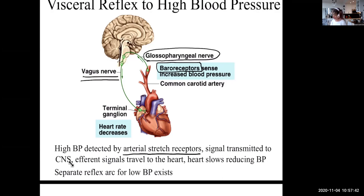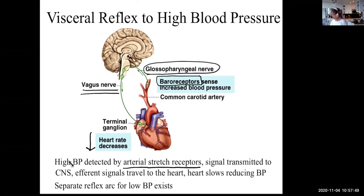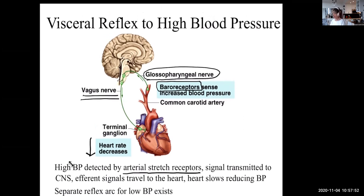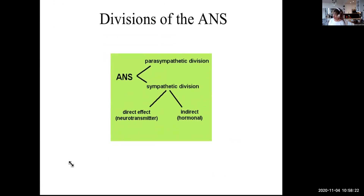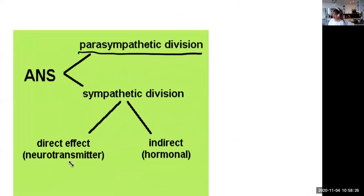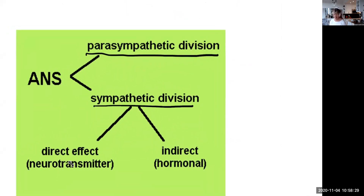Why would the heart rate decrease in response to increased blood pressure? Lower heart rate means less blood being pumped to the body. There's a whole different reflex arc if blood pressure is low. The divisions of the autonomic nervous system are parasympathetic — rest and digest — and sympathetic — fight or flight.